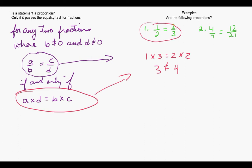Let's take a look at the second example. We have four over seven equals twelve over twenty-one. We're going to do the same thing, we're going to take four times twenty-one equals seven times twelve. Four times twenty-one is eighty-four and seven times twelve is also eighty-four. So here they're equal, so we can state that yes, this is a proportion because the two fractions are equal.